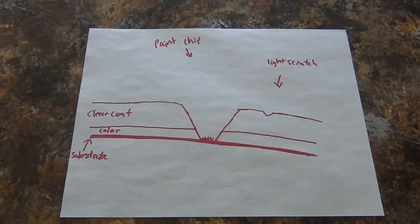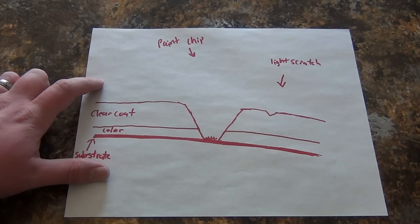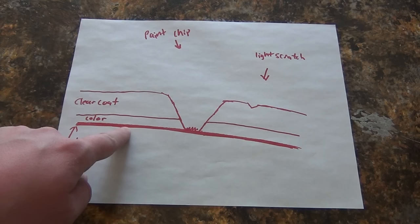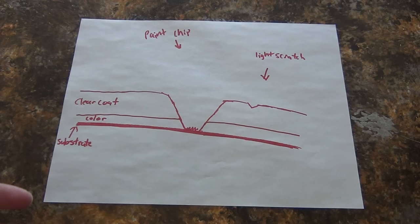First of all, I think it's important that we go through basically how touch-up paint works and what we're trying to accomplish with it. We'll be taking a look at the cross-section of your vehicle's paint. There's a few different layers. Here is the substrate, and in my particular case, this would be the steel of the hood. And then we've broken down the paint very simply into two layers, the color and the clear coat. As you can see, the clear coat is a lot thicker than the actual paint.